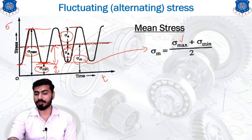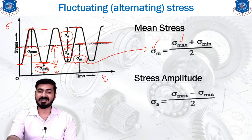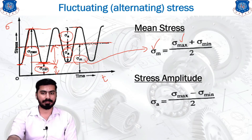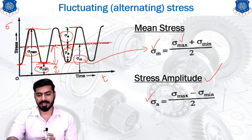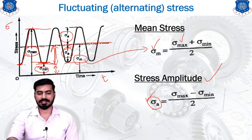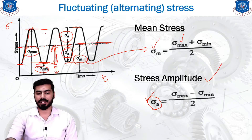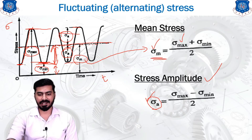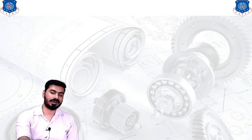Another important stress is the alternating stress, also called stress amplitude, represented by sigma_a. It is calculated as sigma_a = (sigma_max − sigma_min) / 2, which gives the half-range from the mean to the maximum or minimum. Both sigma_m and sigma_a are the controlling factors for designing components under fluctuating loads.